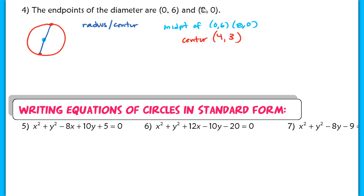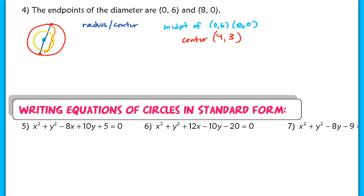To find the radius, some students find the distance between the endpoints — which is correct — but then forget to cut it in half. Remember, that distance represents the diameter, and the radius is half the diameter. So we'll have to cut that number in half.